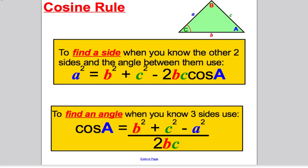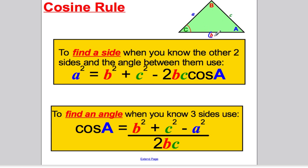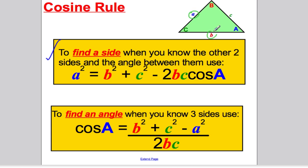Let's move on to the cosine rule. Here are the two versions. The cosine rule is for similar triangles, labeled the same way — capital A opposite little a, capital B opposite little b, capital C opposite little c. One version helps you find a side: you need to know two sides and the angle in between. The second version is if you're given all three sides — then you can work out any angle.